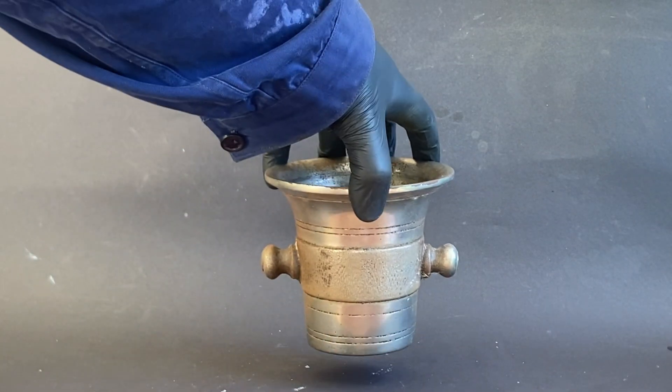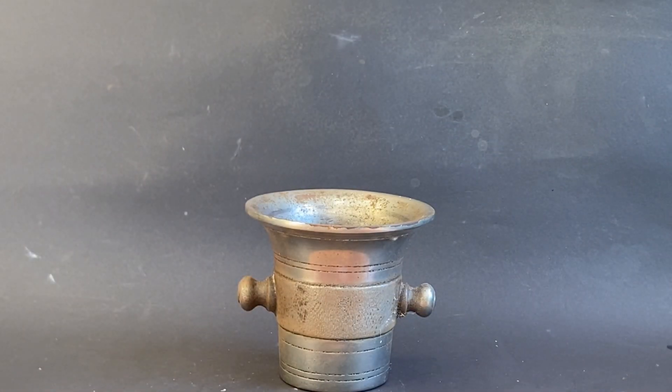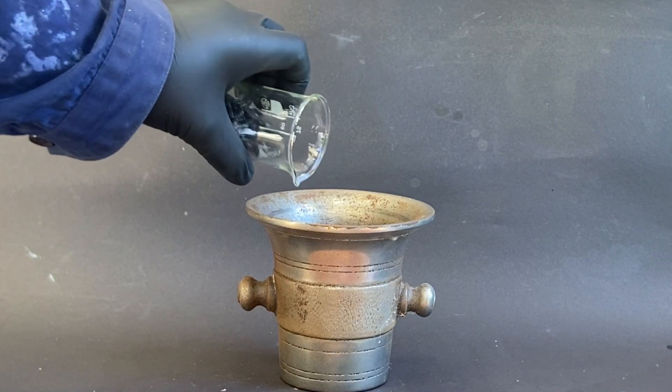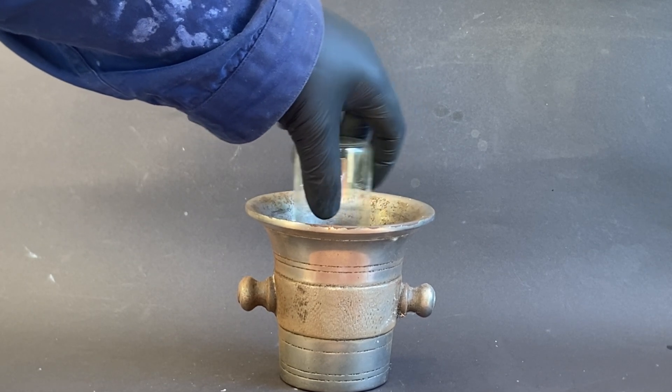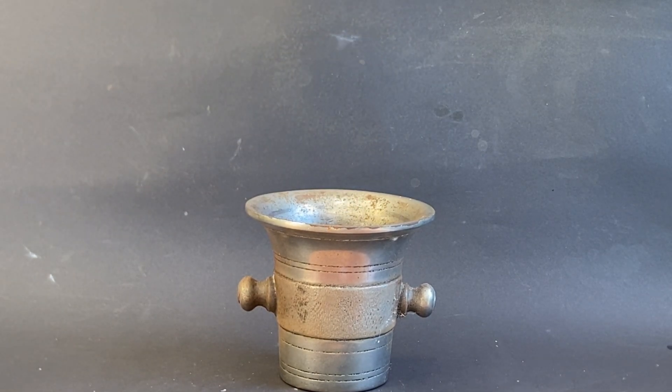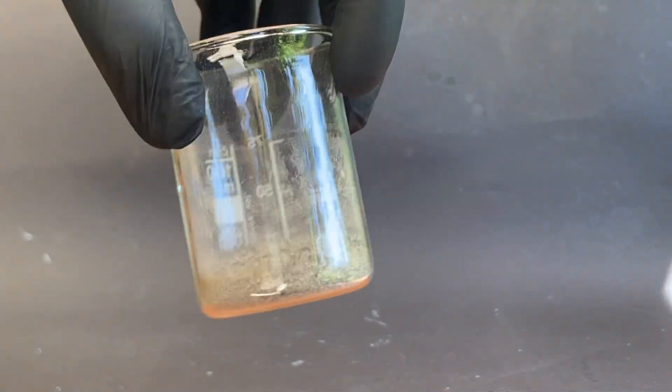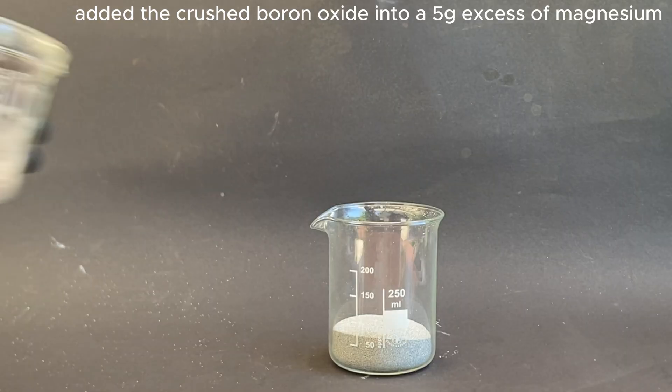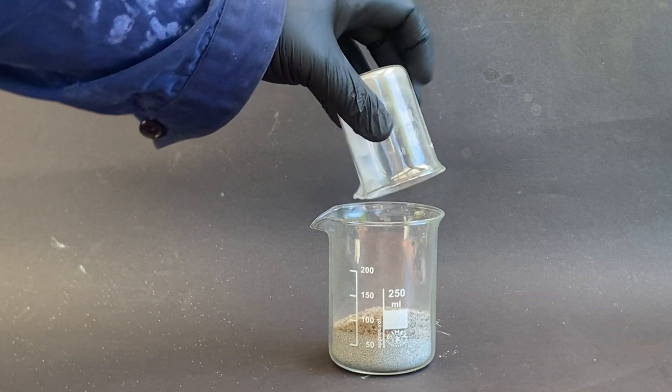Next I crushed the boron oxide into a fine sand. After that, I mixed the boron oxide sand with a 5g excess of magnesium.